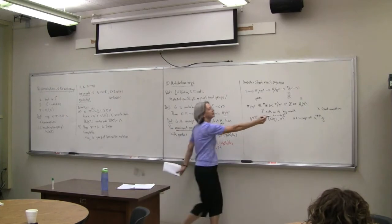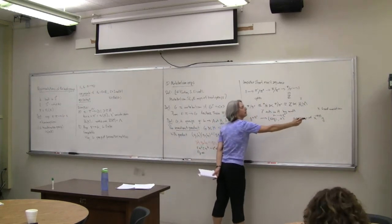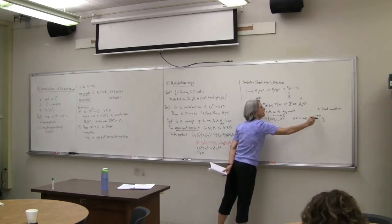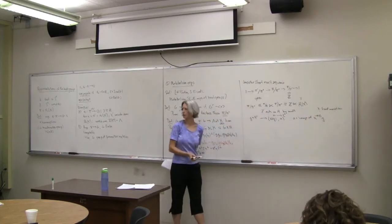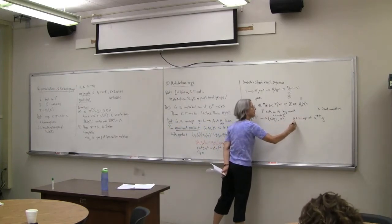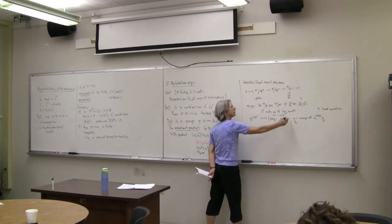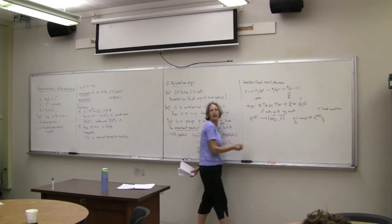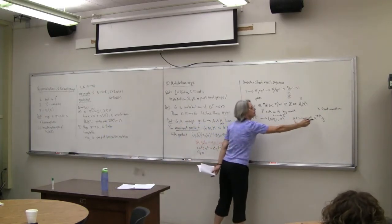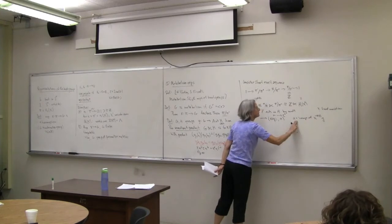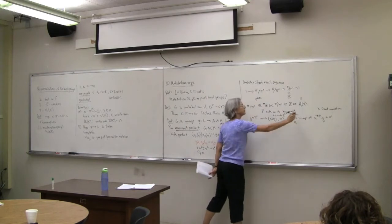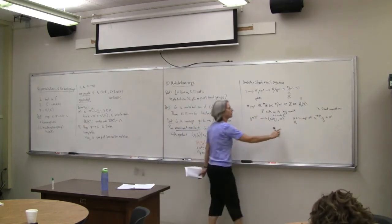We fix one thing in the kernel, and then if you multiply by an appropriate power of x, you get something in the commutator subgroup. So this is something in π′, but now I'm thinking of its image in H₁ under abelianization. This gives us the semi-direct product structure.